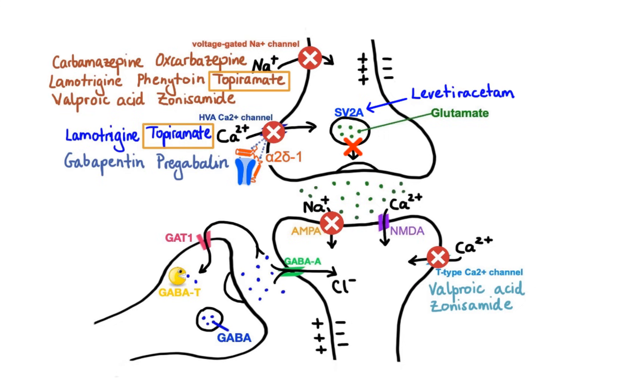Next we have antiepileptic drug called felbamate that inhibits excitatory neurotransmission by blocking NMDA receptors. And finally, we have drugs that act on the GABA system.